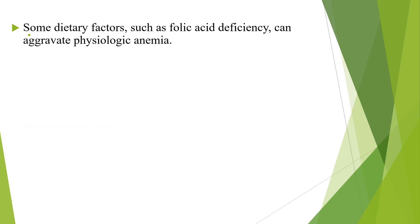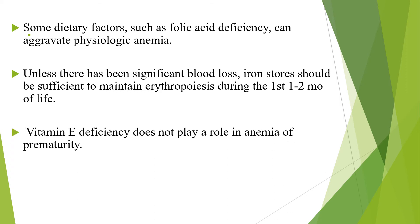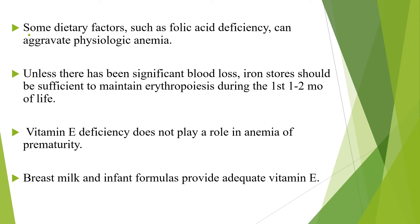Some dietary factors such as folic acid deficiency can aggravate physiologic anemia, and unless there has been significant blood loss, iron stores should be sufficient to maintain erythropoiesis during the first few months of life. Vitamin E deficiency does not play a role in anemia of prematurity — breast milk and infant formulas provide adequate vitamin E, so there is no vitamin E deficiency if the baby is getting breast milk.